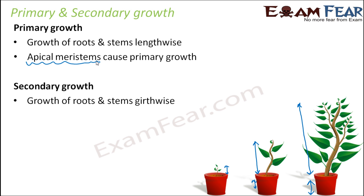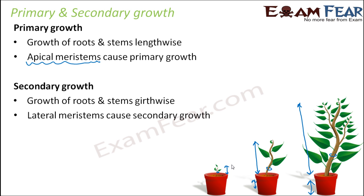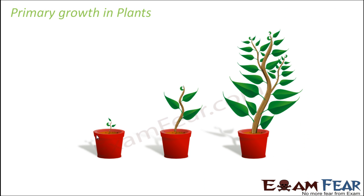When I say secondary growth, we talk about the growth of roots and stem girthwise. So if you see the thickness, it is very, very thin. Comparing further, it is a little more thicker, and even more thicker. So gradually as the plant is growing, the thickness of the stem as well as the thickness of the root is also increasing. So that increase in girth is called secondary growth. And what causes secondary growth? The lateral meristems cause secondary growth. And these lateral meristems are nothing but cambium. Cambium is another name for lateral meristems. So in this section, we will focus on the lateral meristems or the secondary growth.